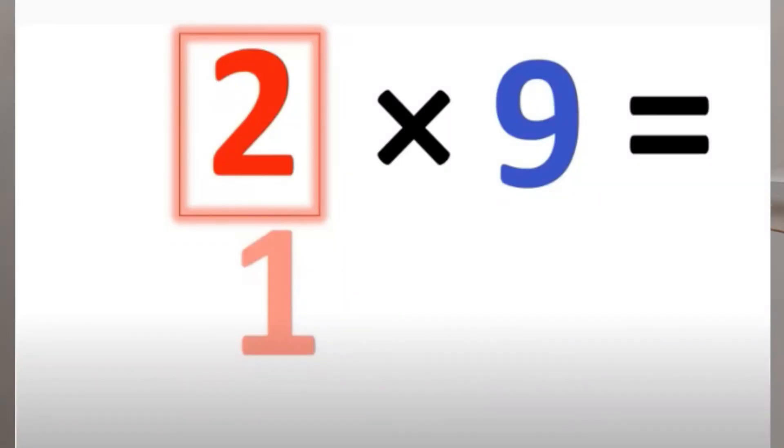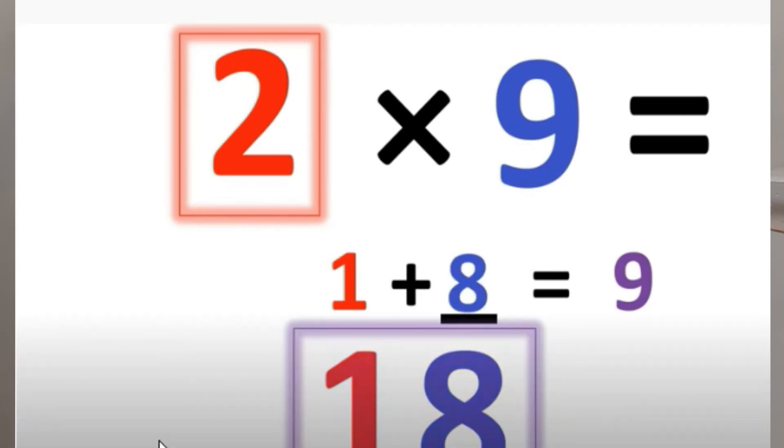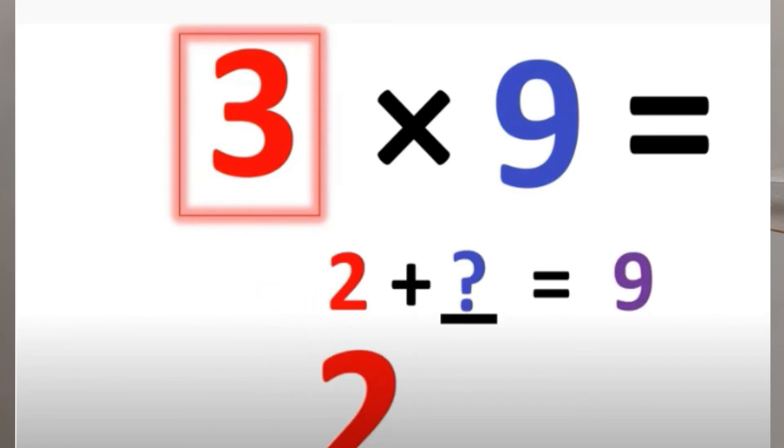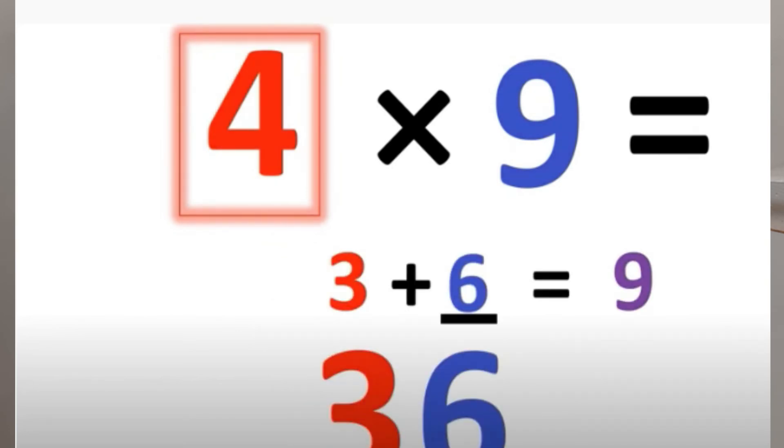So, 8 becomes the second number. So, the answer is 18. Just like that. If we say 3 times 9, 3 less than 1 is 2. So, then we say 2 plus what number equals 9? We know 2 plus 7 equals 9. So, the answer is 27. Let's say 4 times 9. 4 less than 1 is 3. So, the answer is 36.